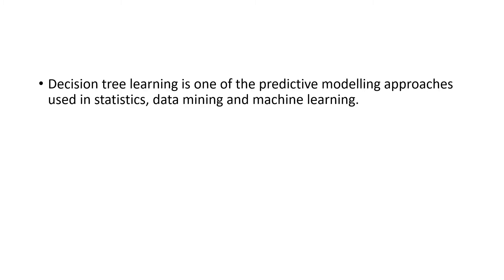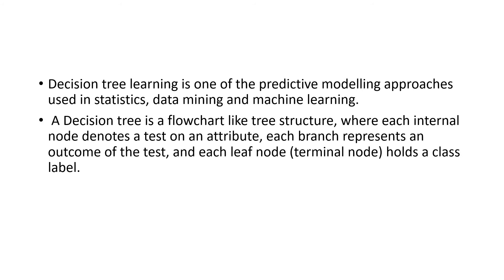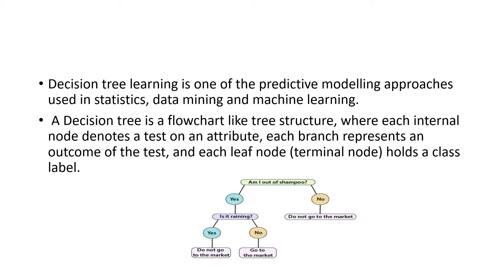Decision tree learning is one of the predictive modeling approaches used in statistics, data mining, and machine learning. A decision tree is a flowchart-like tree structure — you might have studied binary trees in a data structure algorithm course. Here, each internal node denotes a test on an attribute, each branch represents an outcome of the test, and each leaf node (terminal node) holds a class label.